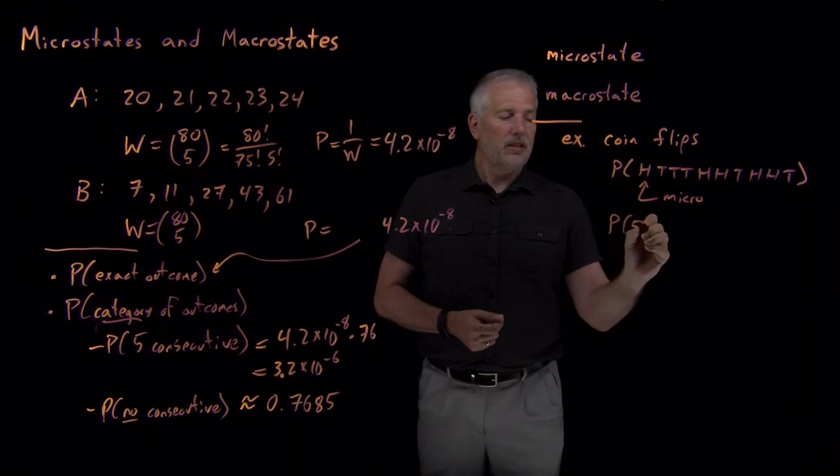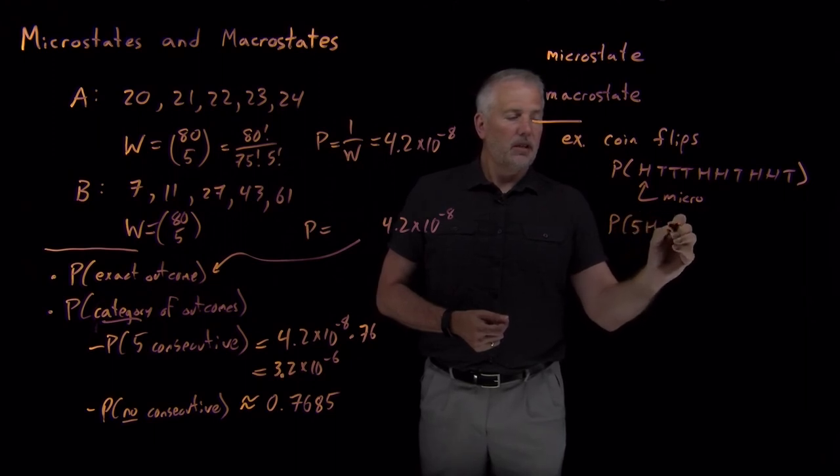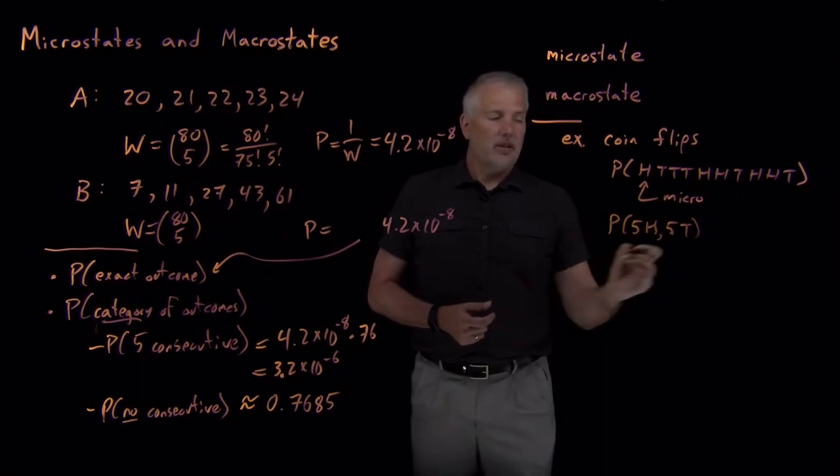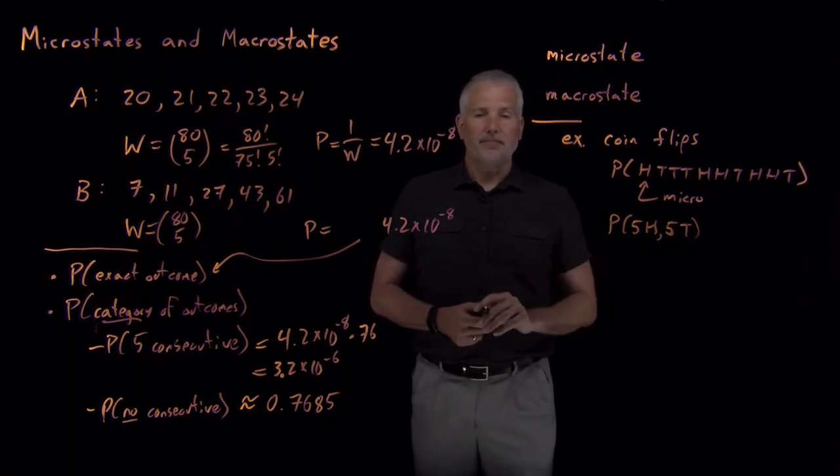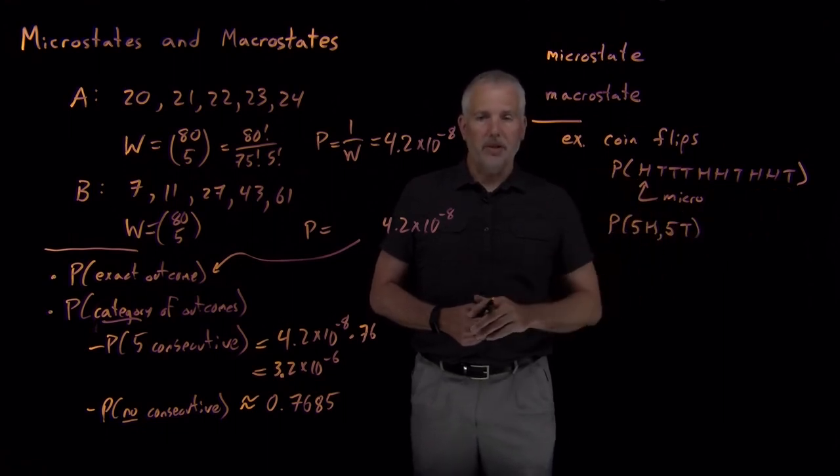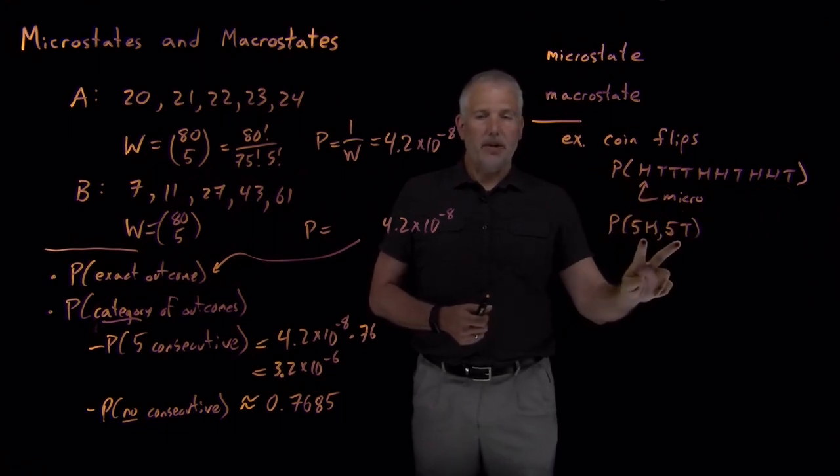Or I could ask a different question. What's the probability that I were to get five heads and five tails if I flipped a coin 10 times? So that includes not just this microstate but a bunch of other microstates that all obey that macroscopic description.